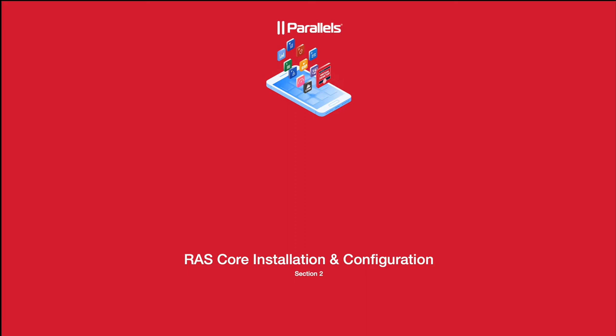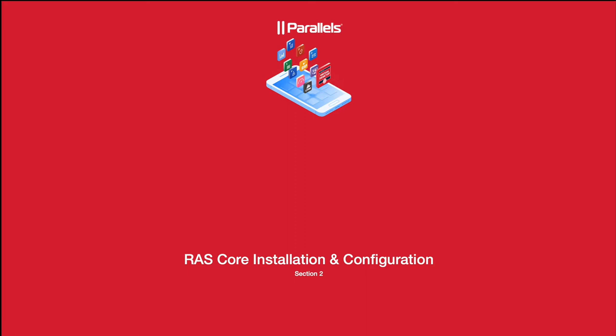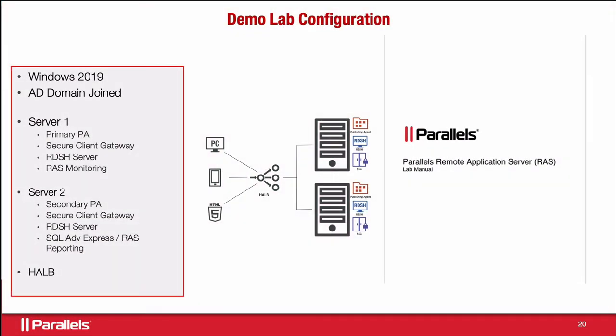Now let's move on to the RAS core installation and configuration. In the lab demo environment, we'll install RAS creating a single all-in-one server, then expand to two all-in-one servers and introduce the HALB. We may add a second load balancer to demonstrate the version 18 capability. The primary server will have the primary publishing agent, secure gateway, remote desktop session host, and the RAS monitoring piece. Secondary server components will be pushed out from the console.